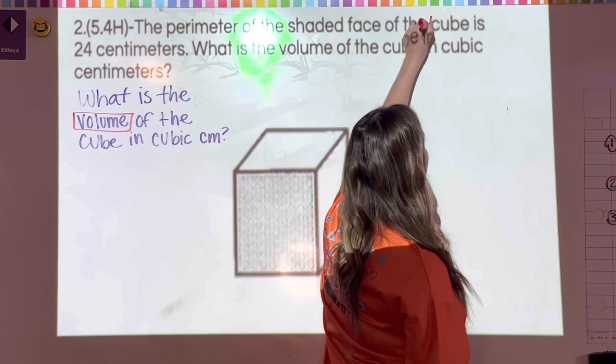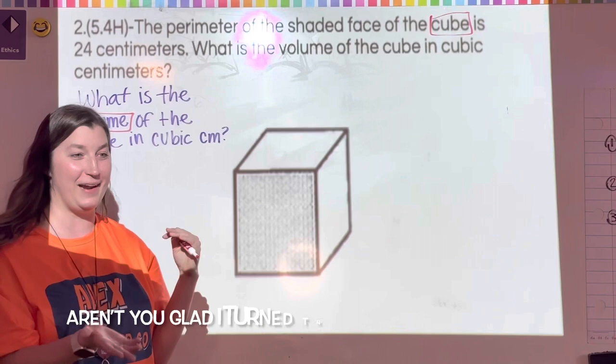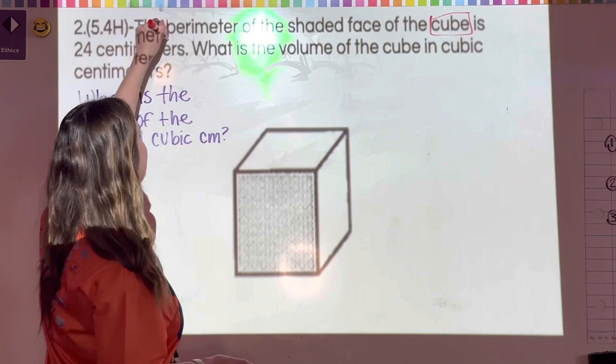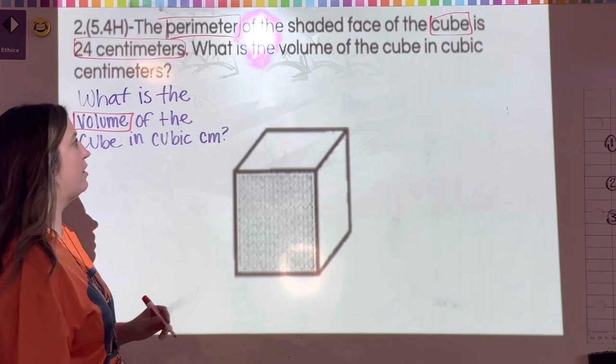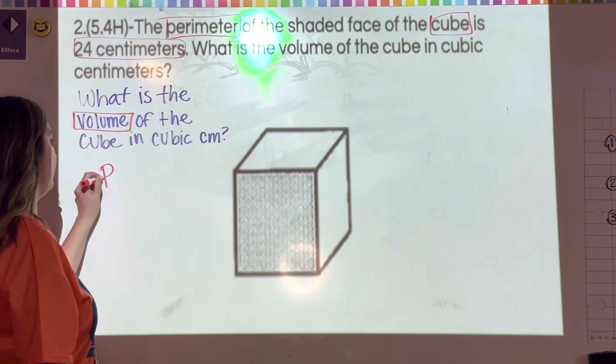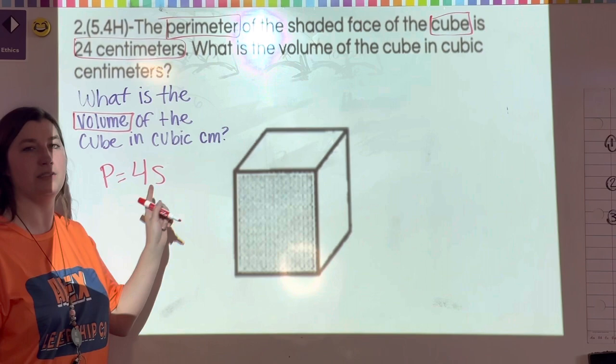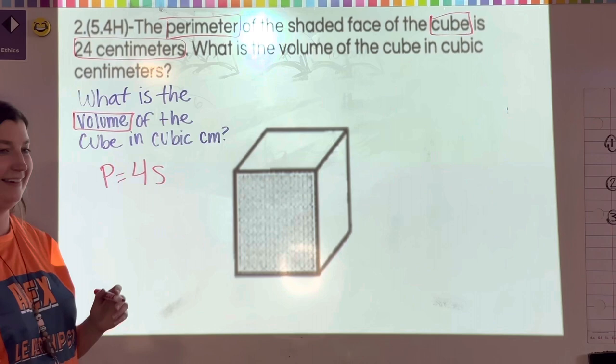We're solving for the volume of the cube in cubic centimeters. The problem tells us we have a cube, meaning all faces are squares. The perimeter of the shaded face is 24 centimeters. Looking at the formula chart, the formula for the perimeter of a square is P = 4s.